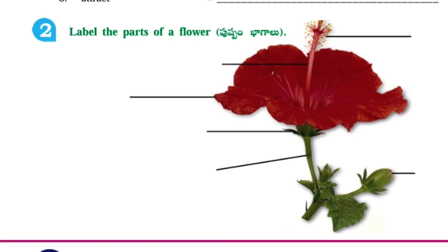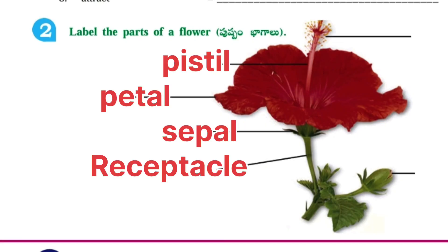Second one, label the parts of a flower. Here a flower is given. We have to label some parts: stamen, pistil, petal, sepal, receptacle, and bud.